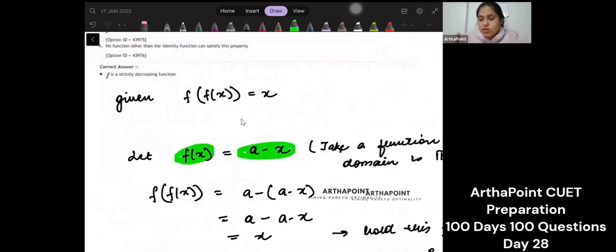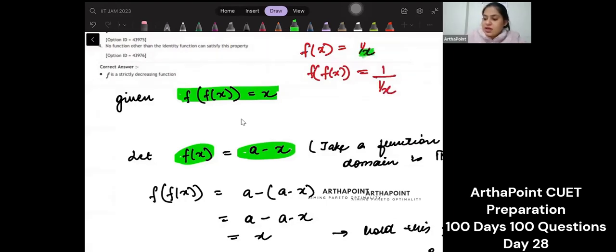You can take any function as long as it follows this property. I will show you multiple other functions. For example, if I go ahead and I take my function, see if this follows. Suppose my function is 1 by x. What will be f of f of x? It will be 1 upon, instead of x, I will replace it with the function 1 by x and I will get back x. That means this is also following this property.